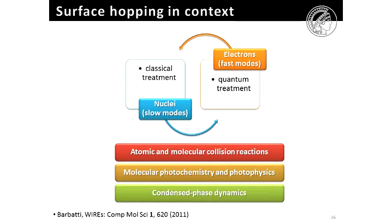The surface hopping is a method that splits the dynamics into a classical part and a quantum part. The classical part are the nuclei, in general, don't need to be, but in general, they are the nuclei, and the quantum part are the electrons, the fast coordinates.